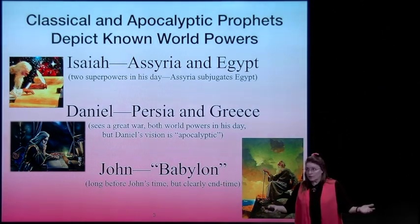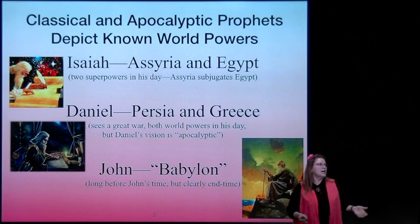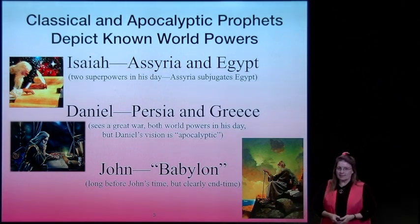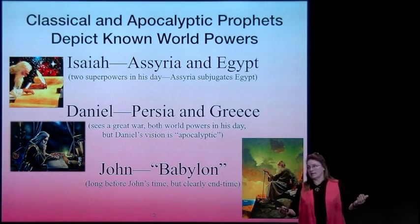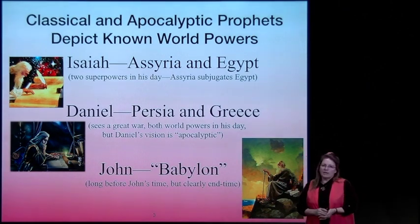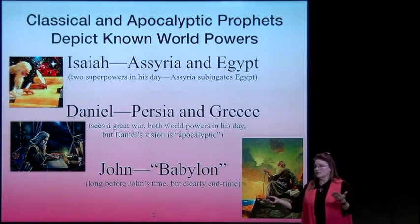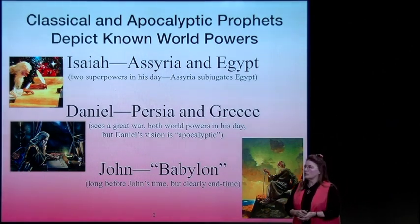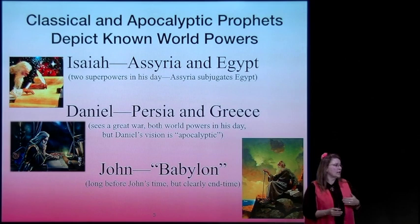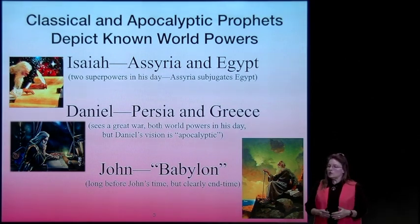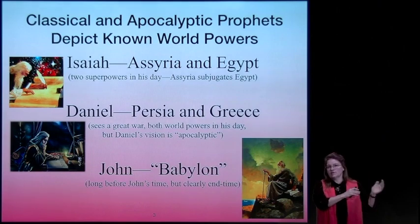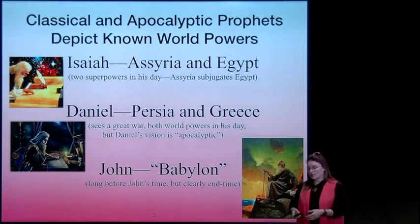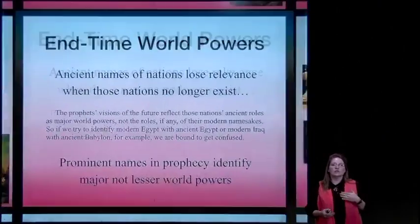These were two superpowers in Isaiah's day, and he will use those as types of shadow. Daniel will use Persia and Greece, familiar to him as the superpowers in his day. And then John the Revelator will choose Babylon as well. But Babylon was not a world power in John's day—it had taken place hundreds of years before—so clearly John was using a type that previous prophets had used to predict something in the end time with a familiar symbol.